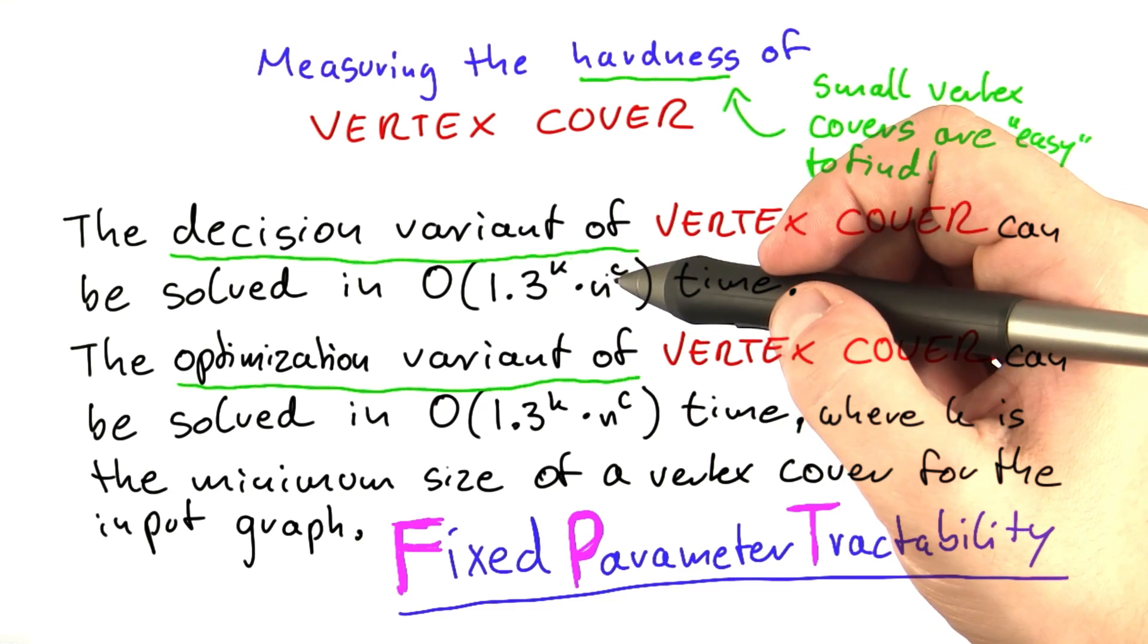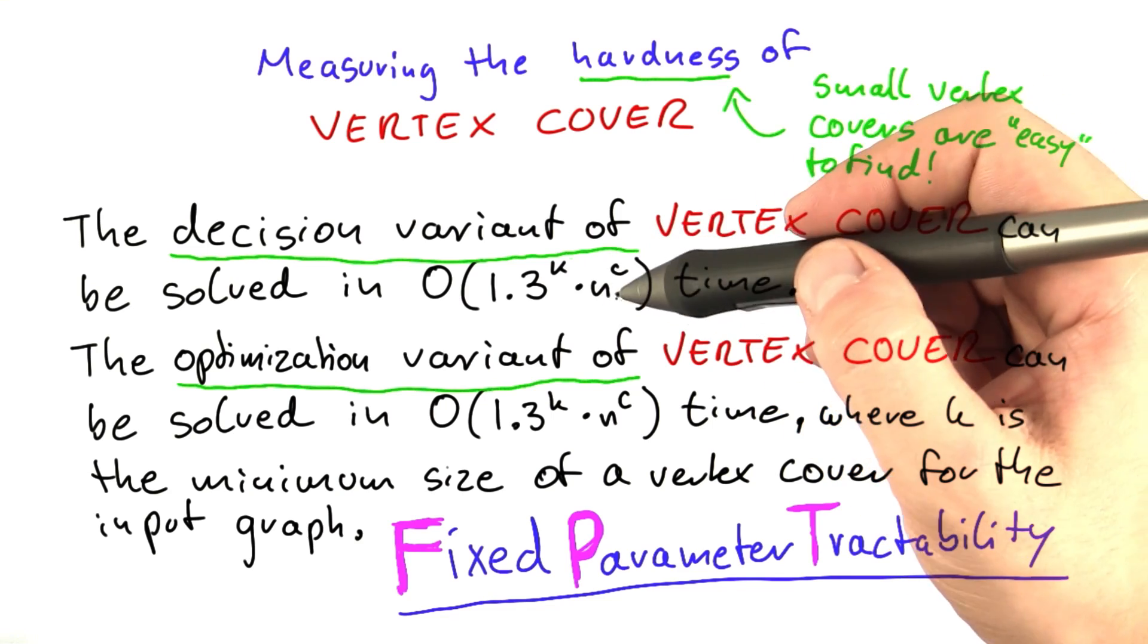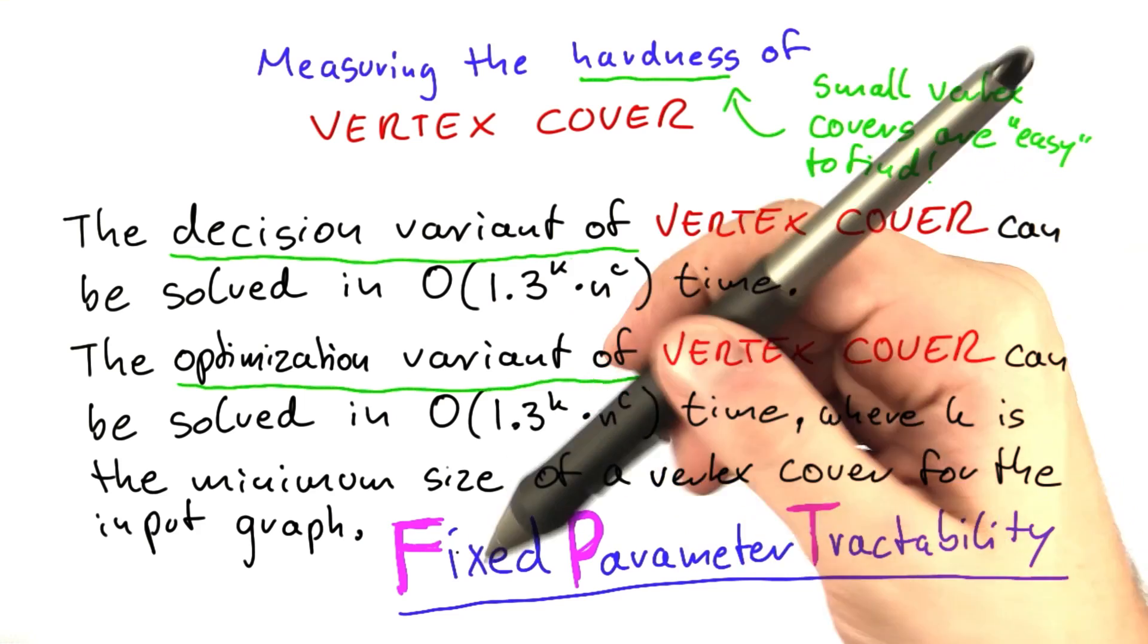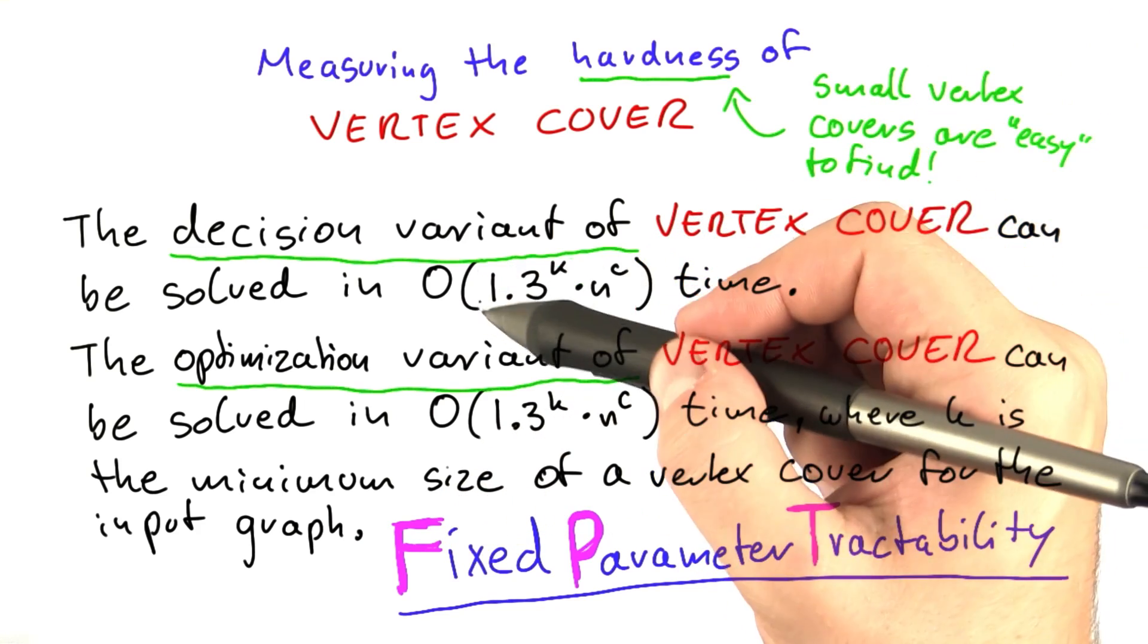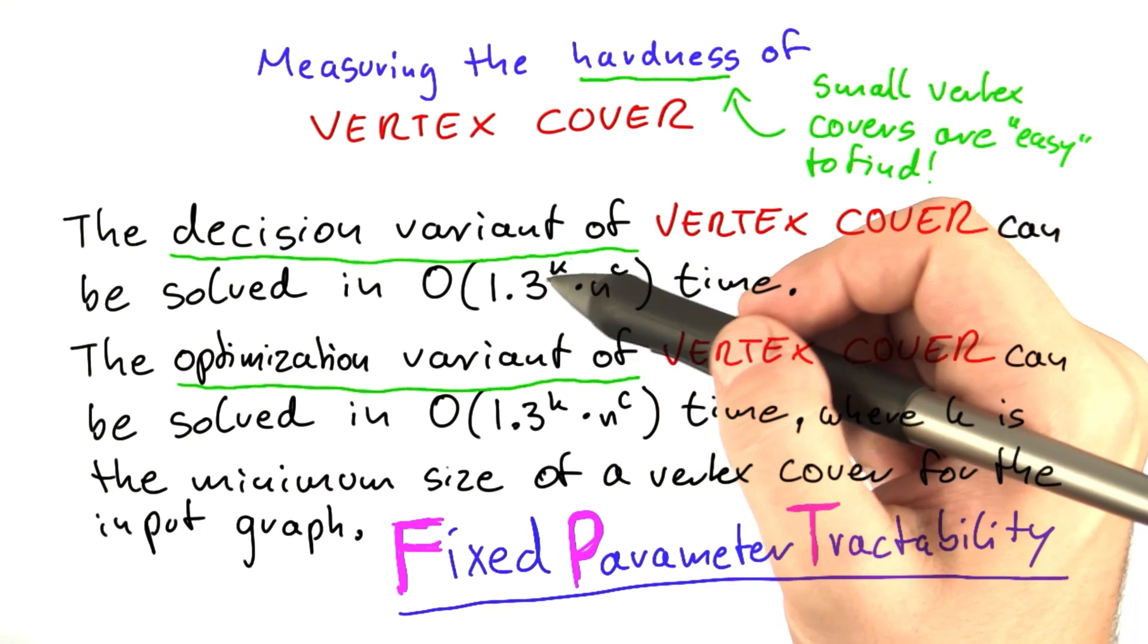The polynomial here depends on certain analysis factors and so on. But the important thing here is to see first of all vertex cover is fixed parameter tractability, and second of all the base of the exponent is actually really good. It's only 1.3^k.